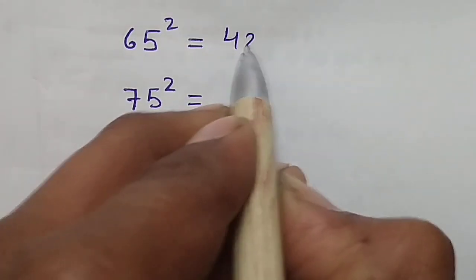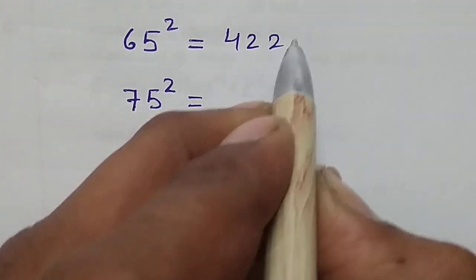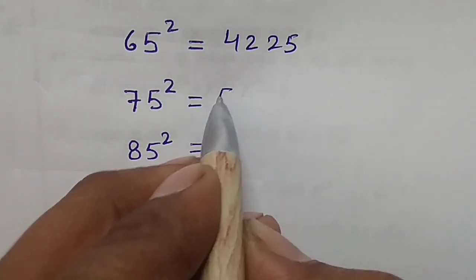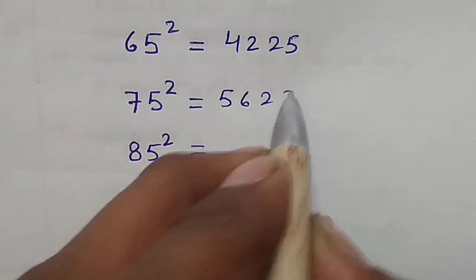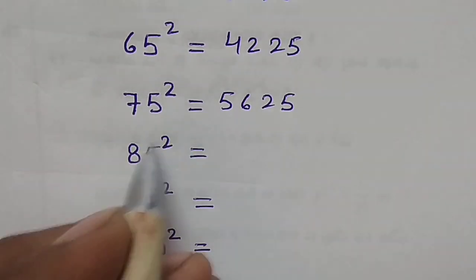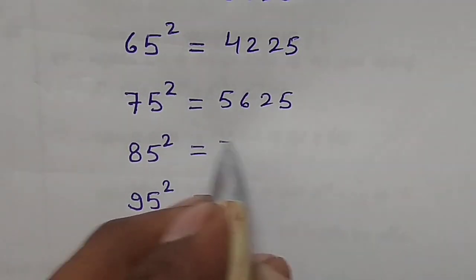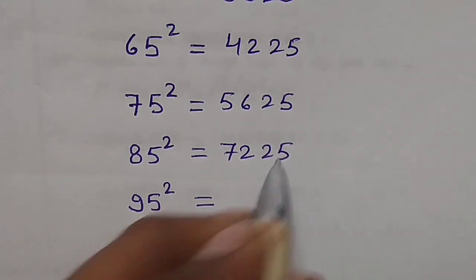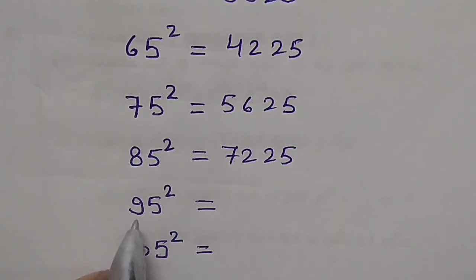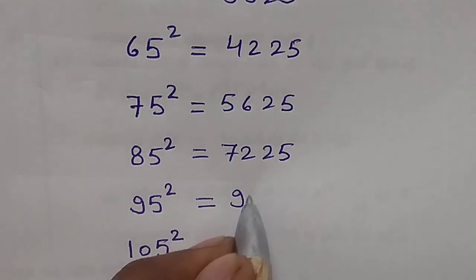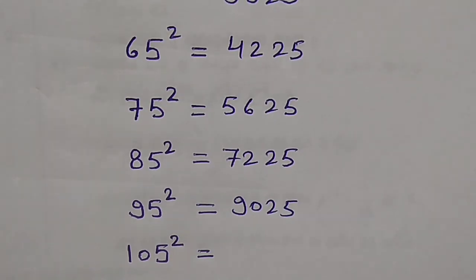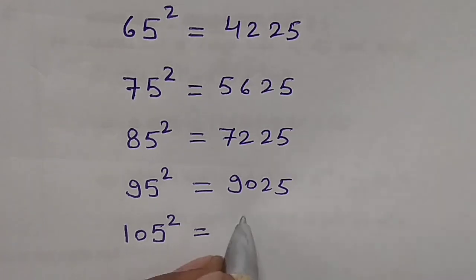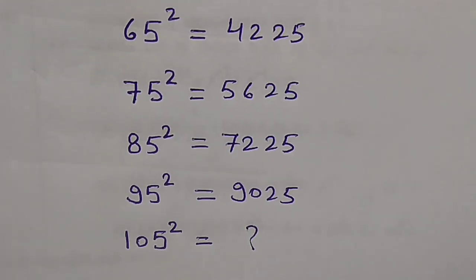7, 7 times 8 is 56 — so 75 squared is 5625. 8, 8 times 9 is 72 — so 85 squared is 7225. 9, 9 times 10 is 90 — so 95 squared is 9025. 10, 10 times 11 is 110 — so 105 squared is 11025. Please share your thoughts in the comment box.